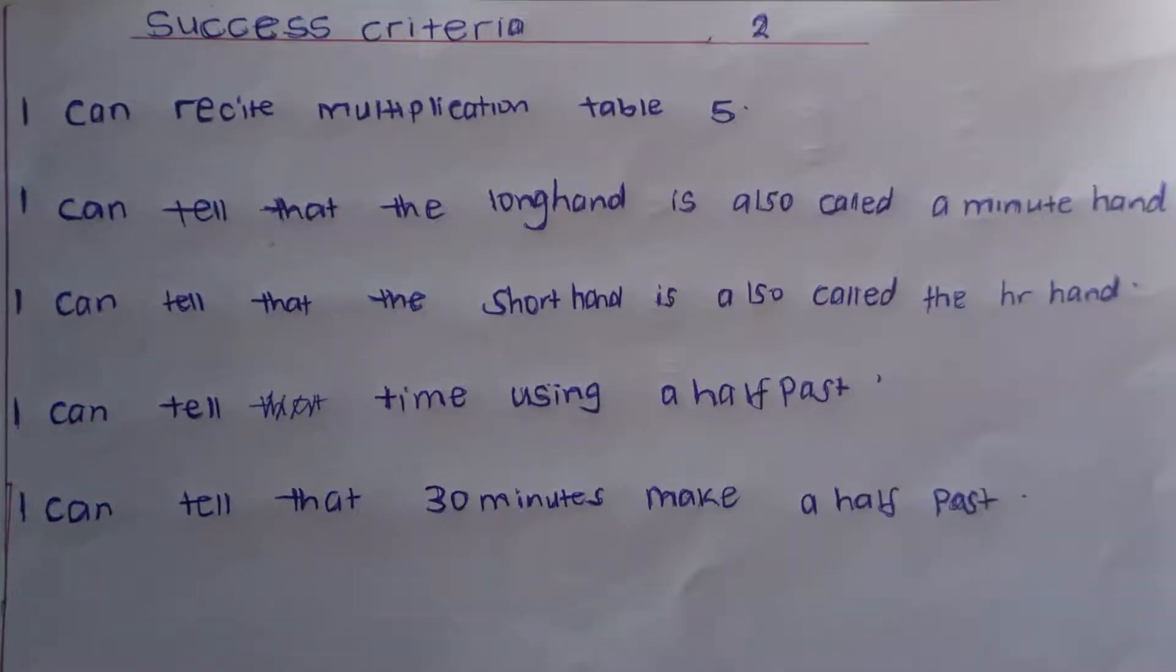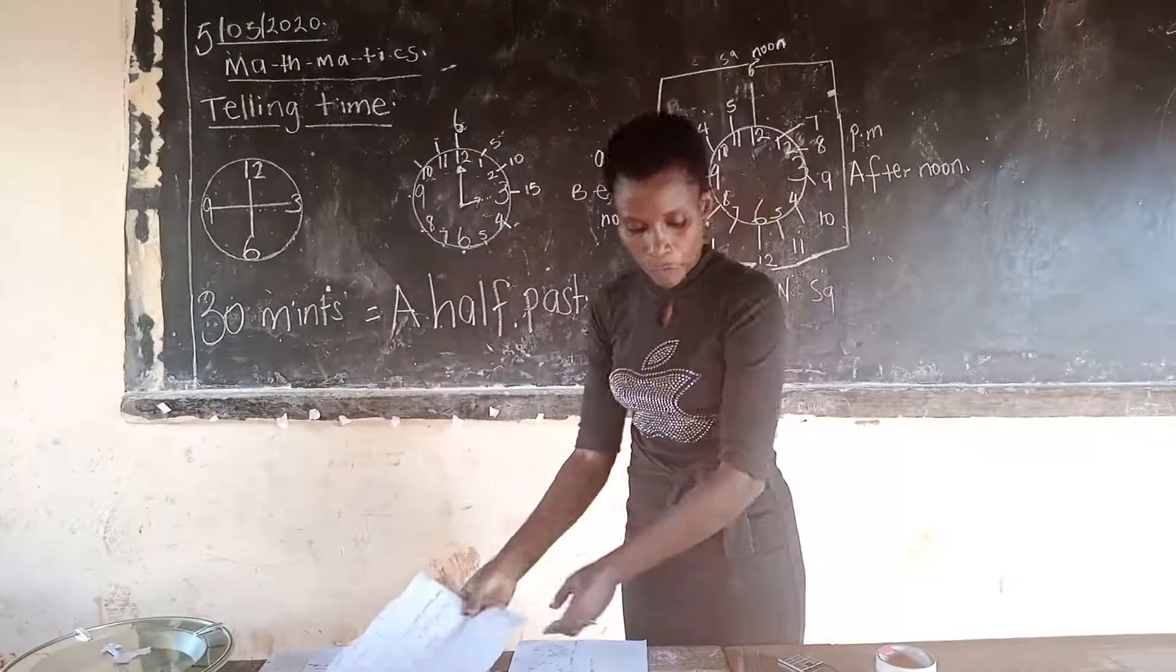I can recite multiplication table 5. I can tell that the long hand is also called a minute hand. I can tell that the short hand is also called an hour hand. I can tell time using half past. Very beautiful.